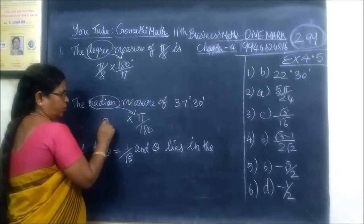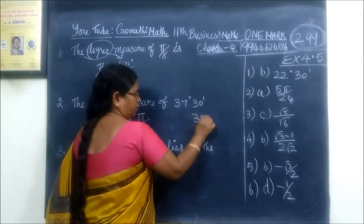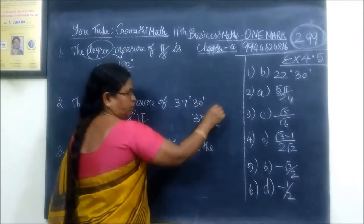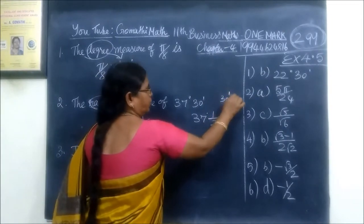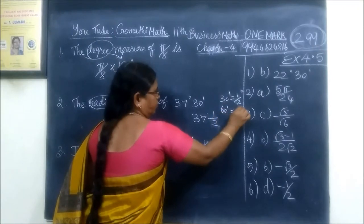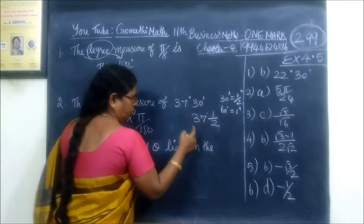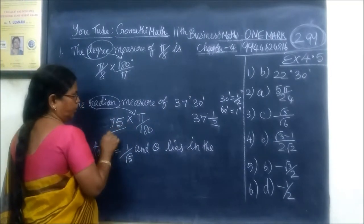I will ask you, how to do this? 37 degree 30 minutes. 30 minutes is half-degree. 30 minutes equals half degree and 60 minutes equals 1 degree. This is improper.